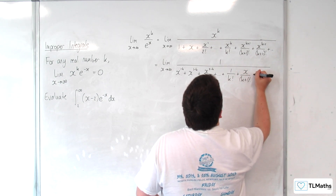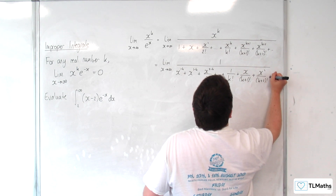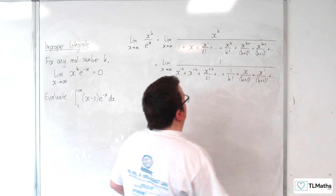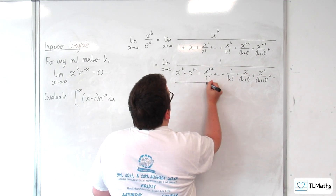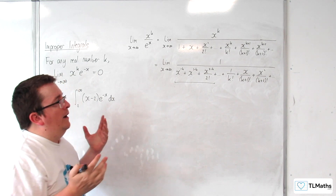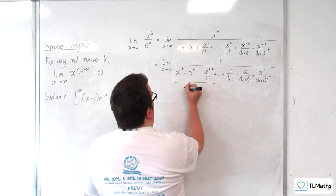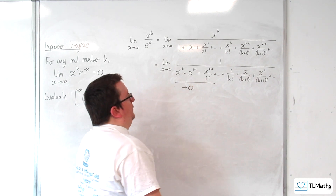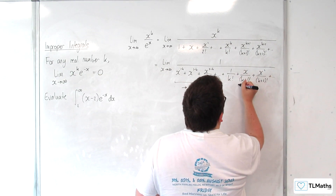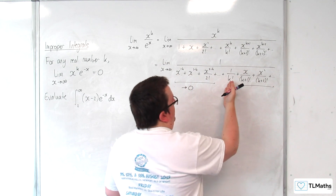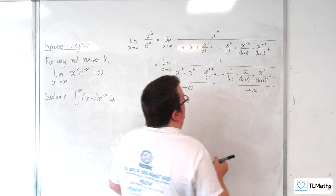Continuing the expansion, we have a term with 1 over k plus 1 factorial, then x squared over k plus 2 factorial, plus dot dot dot. Now, as x tends to infinity, each of these earlier terms are 1 over x to the something, so all of these will tend to 0. Whereas all of these later terms — and this term here — will tend to infinity as x tends to infinity.